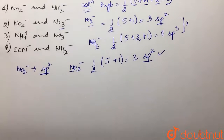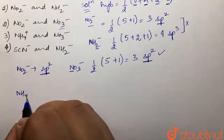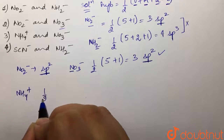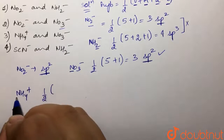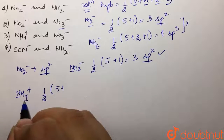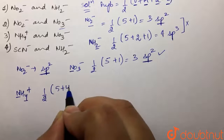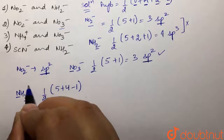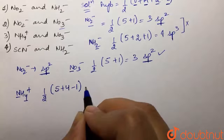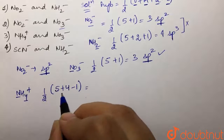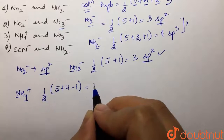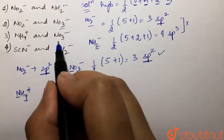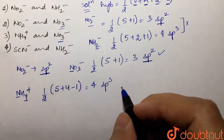For Option 3, we have the ammonium ion NH₄⁺. Half of (5 + 4 − 1) / 2 = 4, so this is sp3 hybridized. Paired with NO₃⁻, which is sp2 hybridized, they do not have the same hybridization.